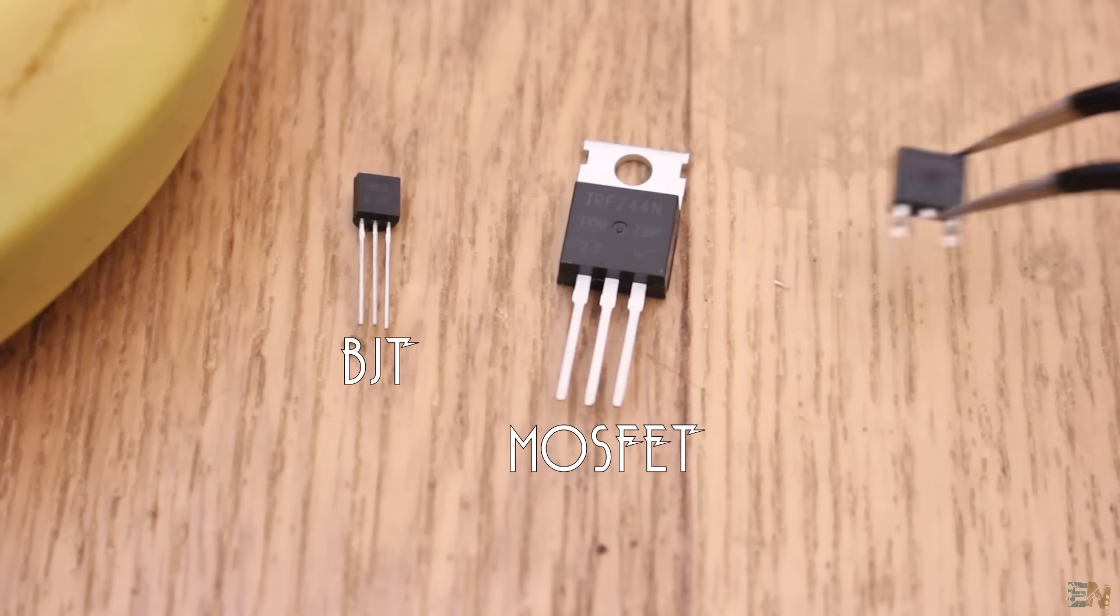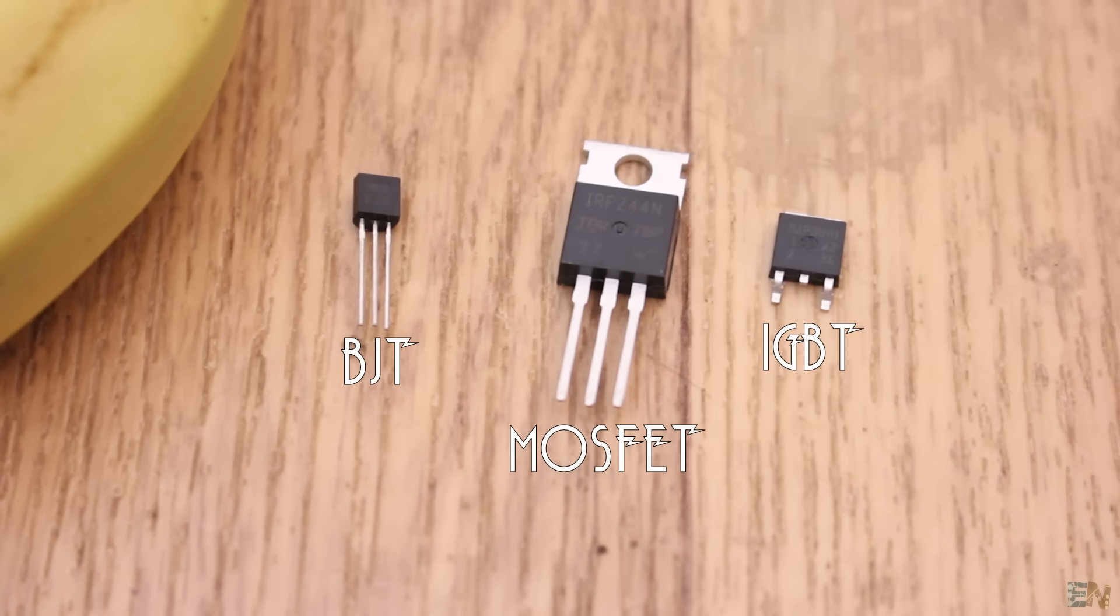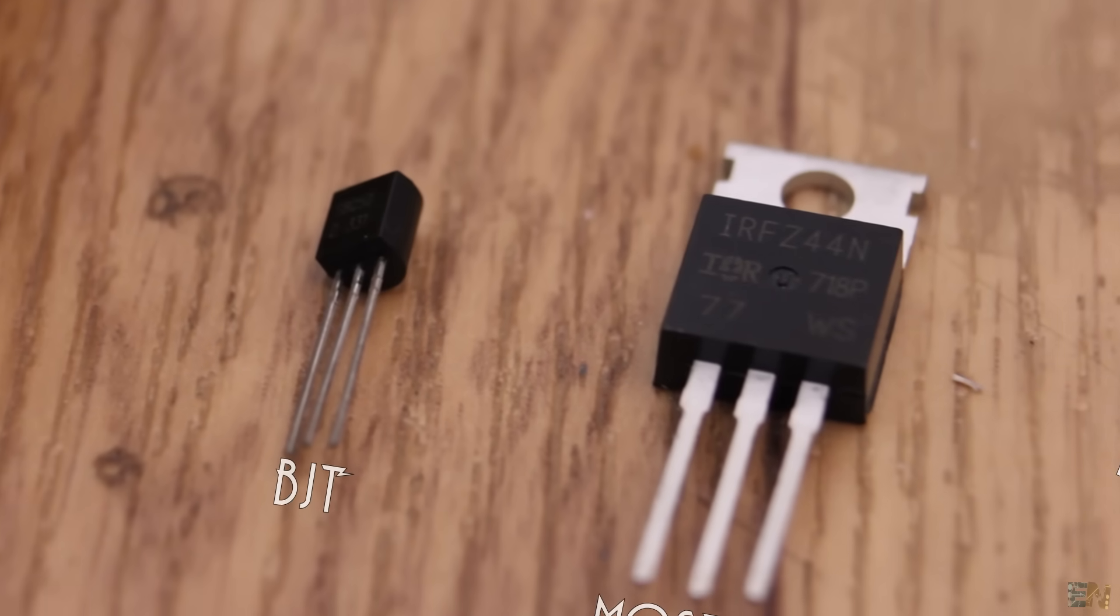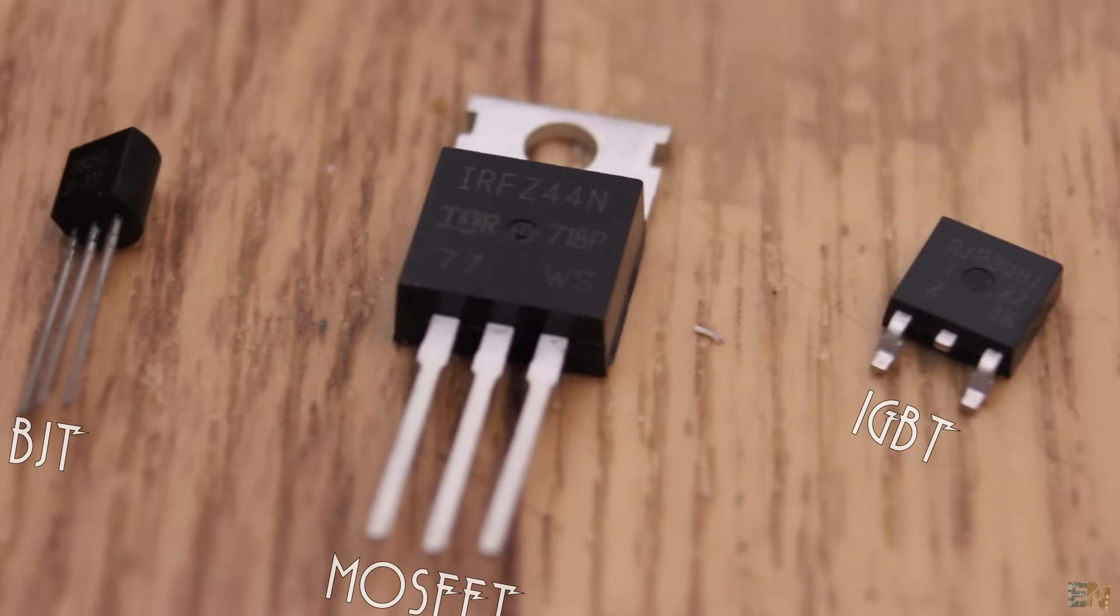MOSFETs, BJTs and IGBTs. There were a lot of requests for this topic in all of my basic components videos. When to use one kind of these transistors or the other one?